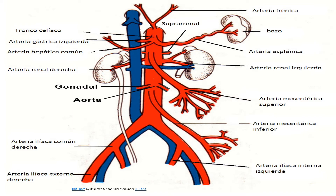The abdominal aorta is a continuation of the thoracic aorta, beginning at the level of T12 vertebrae. It is approximately 13 cm long and ends at the level of the fourth lumbar vertebra (L4). At this level the aorta terminates by bifurcating into the right and left common iliac arteries, which supply the lower part of the body, the lower extremities, and the pelvic cavity.